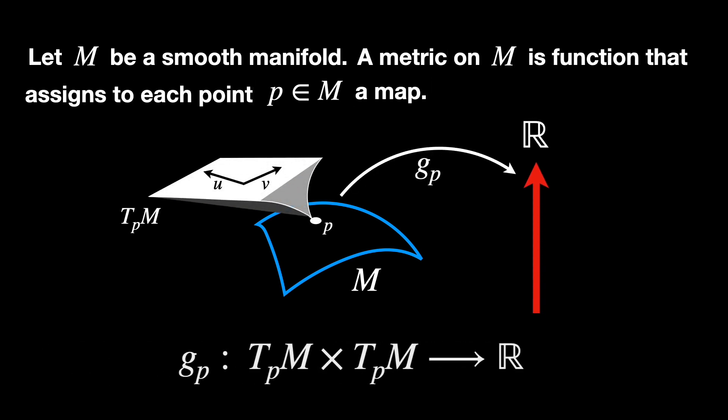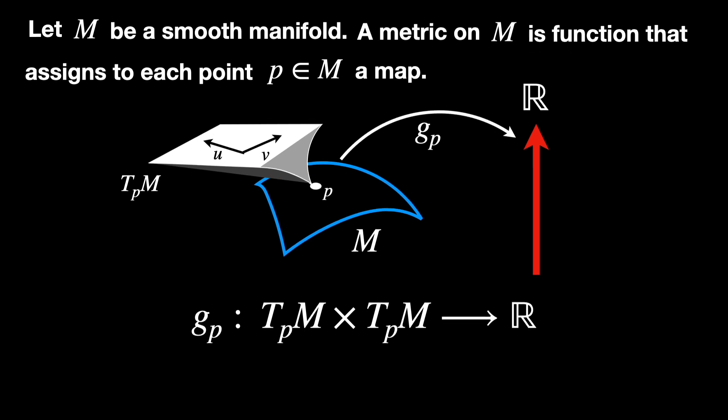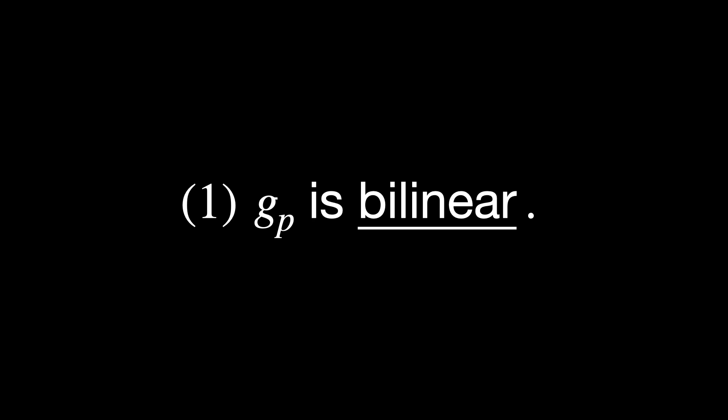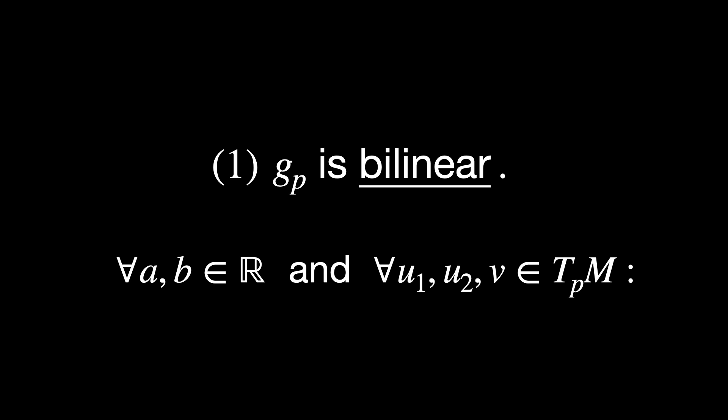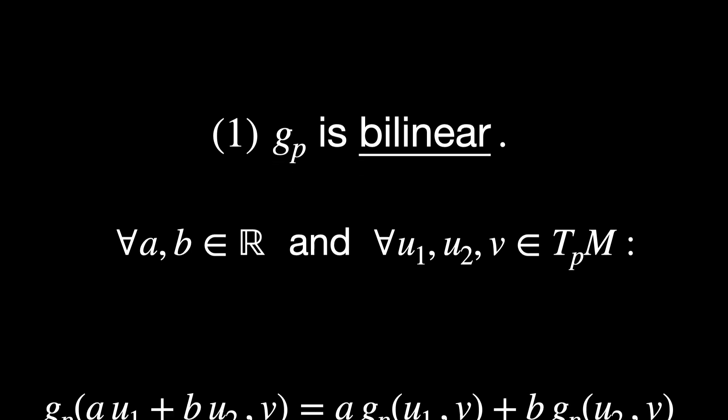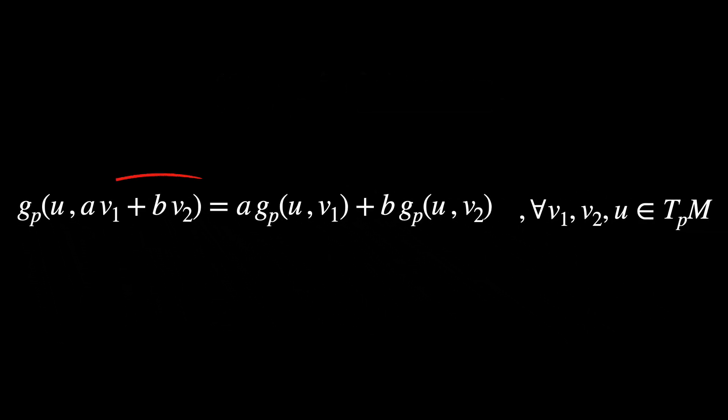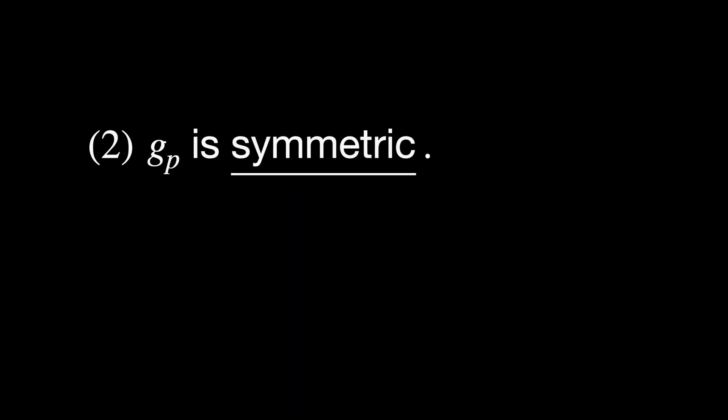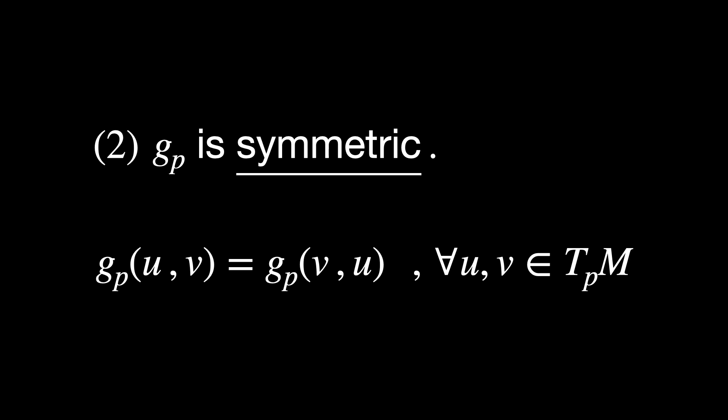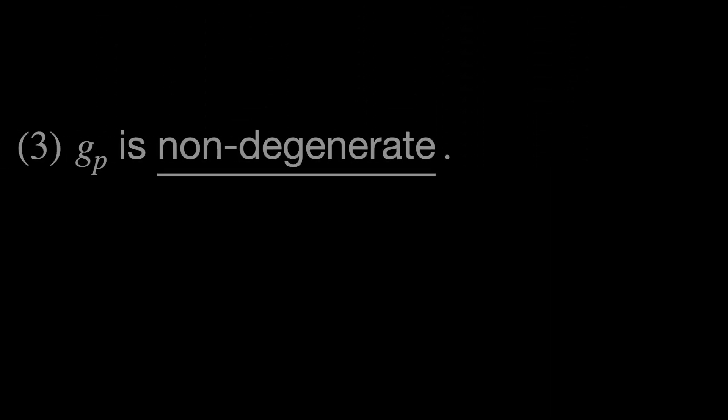Okay, it's time to review some of the things we talked about here, but rigorously this time. Let M be a smooth manifold. A metric on M is a function that assigns to each point P in M a map, such that g_P is bilinear. So for all A and B in the real line, and for all U₁, U₂, and V vectors in the tangent space at the point P, this relation is valid. Of course, this is also valid for the second argument. Second, g_P is symmetric, which can be translated into this equation.